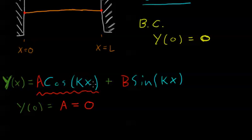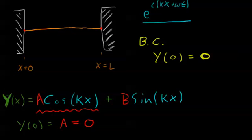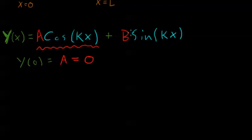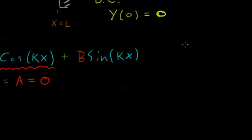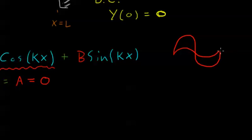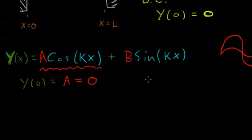A equals 0, so whatever cosine of x is, for these boundary conditions the cosine term does not contribute. We know that b can still equal anything, but the solution is just b times sine of kx. The size of b will affect the amplitude — if b is bigger, we'll have a larger amplitude wave. But any value of b can satisfy this differential equation.